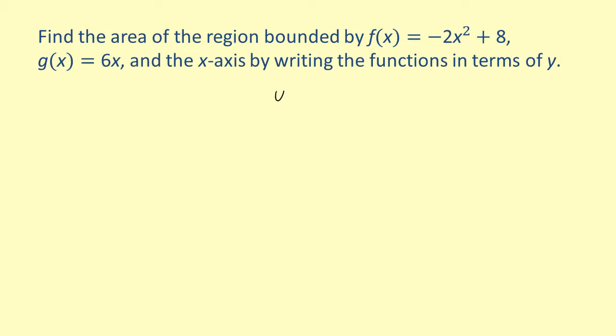So we get u(y) equals the square root of (4 minus y over 2). Doing the same for g(x), we get v(y) equals y over 6.